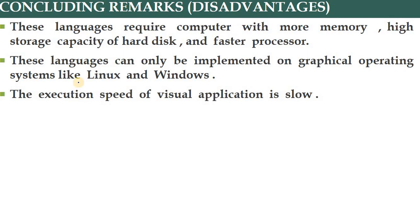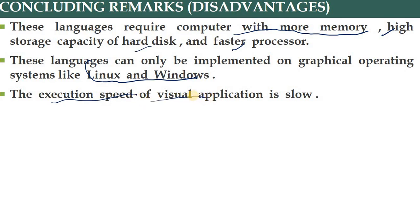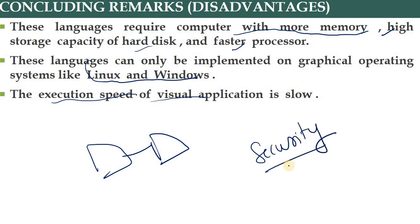Disadvantages: it requires a computer with more memory, high storage, hard disk, and a faster processor for building large instruments. These languages can only be implemented on graphical operating systems like Linux and Windows. The execution speed of VI is low because one instrument is connected to another and they are interdependent. The most important disadvantage is data security — if data goes to the cloud, anyone can steal or misuse it.